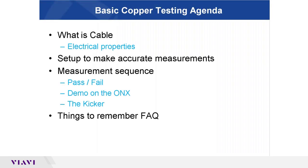Here is a quick look at our agenda. We're going to talk about cable and electrical properties in a fashion that makes sense to telephone people — I'm not an electrical engineer. We'll talk about how to set up to make accurate measurement sequences, pass/fails, and demo this stuff on the ONX. Towards the end of the session I'll introduce something I call the kicker, and then we'll end with things to remember and frequently asked questions.